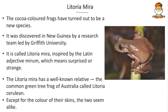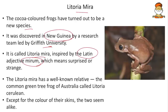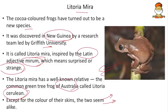Litoria mira is a newly discovered cocoa-colored frog found in New Guinea, discovered by a research team led by Griffith University. It is named after the Latin adjective 'mirum' meaning surprised or strange. It closely resembles the common green tree frog of Australia, Litoria caerulea — the two look alike except Litoria mira is brownish while the Australian species is greenish.